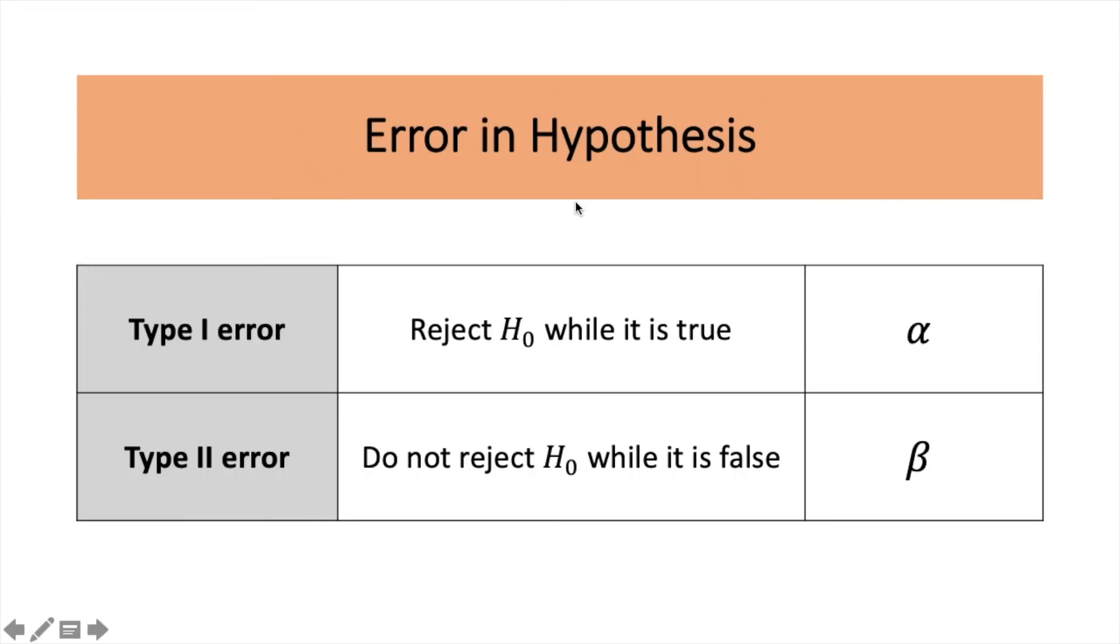We have two types of errors. We have Type 1 error, and we have Type 2 error. Type 1 error is when we reject the null while it is true. So, it means you are not supposed to reject the null, but you reject it. And we denote Type 1 error as alpha.